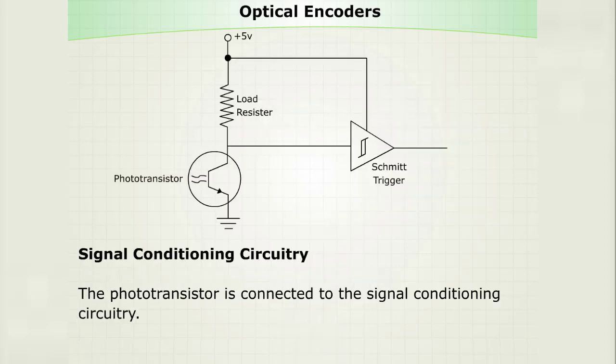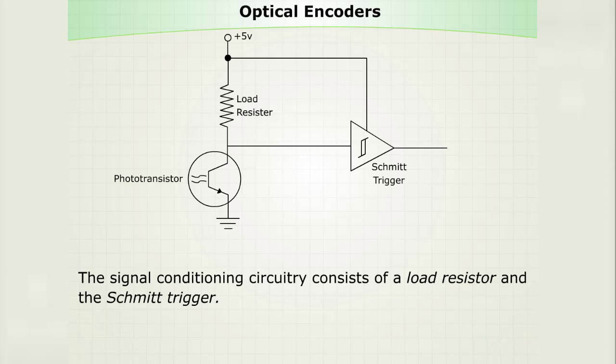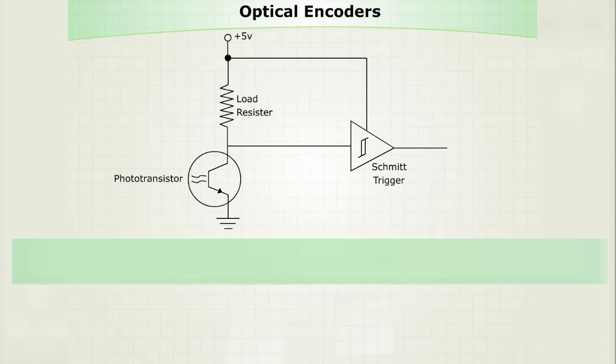The phototransistor is connected to the signal conditioning circuitry. The signal conditioning circuitry consists of a load resistor and the Schmitt trigger. Let's see how the circuitry works as the light is alternately blocked and passed to the transistor.